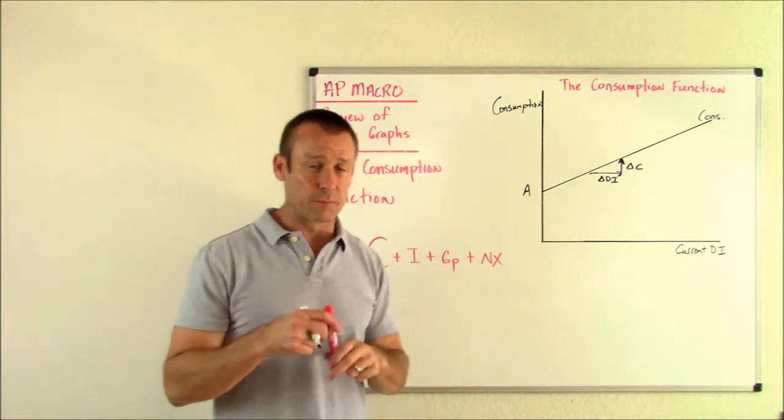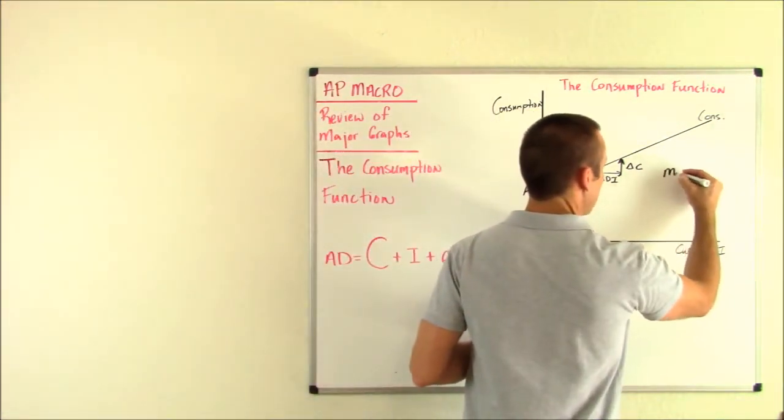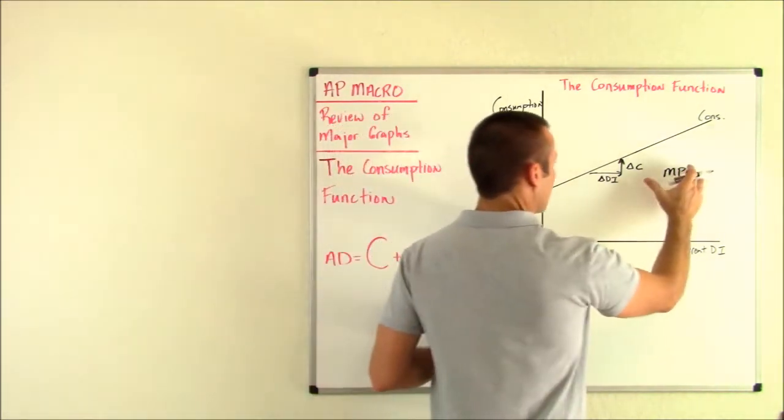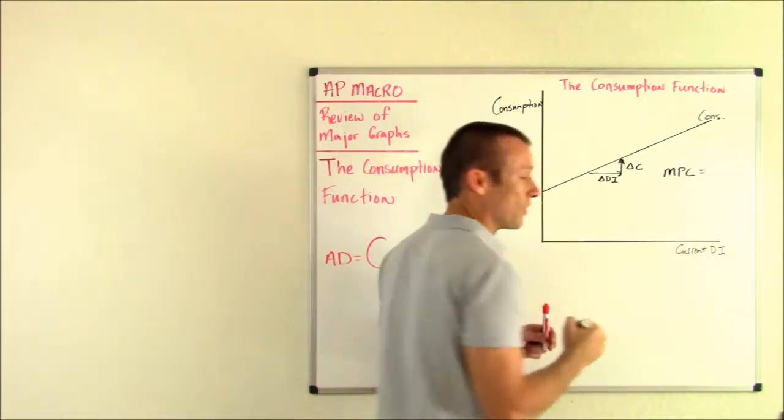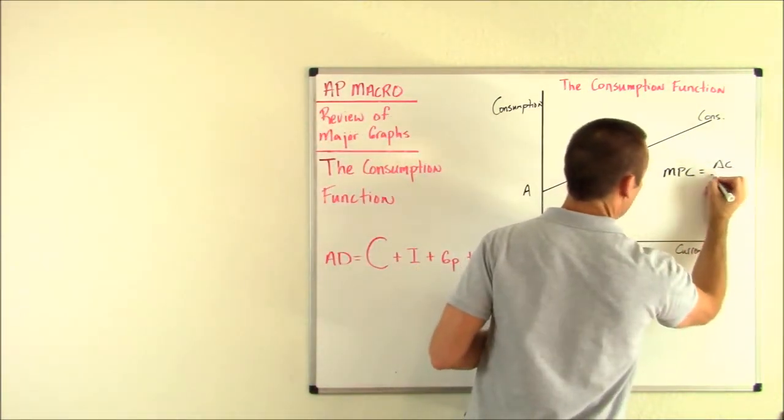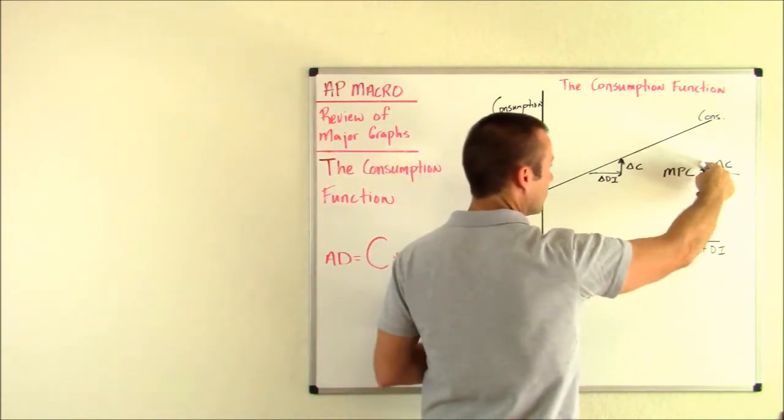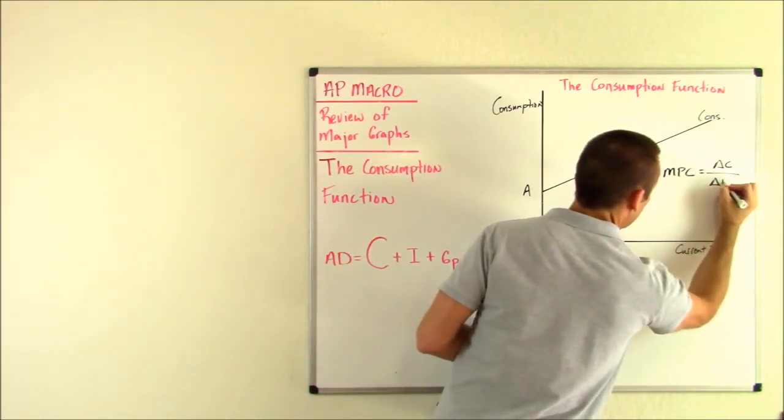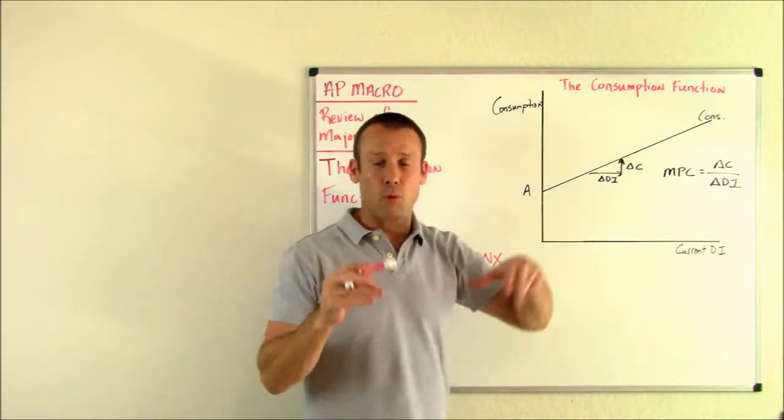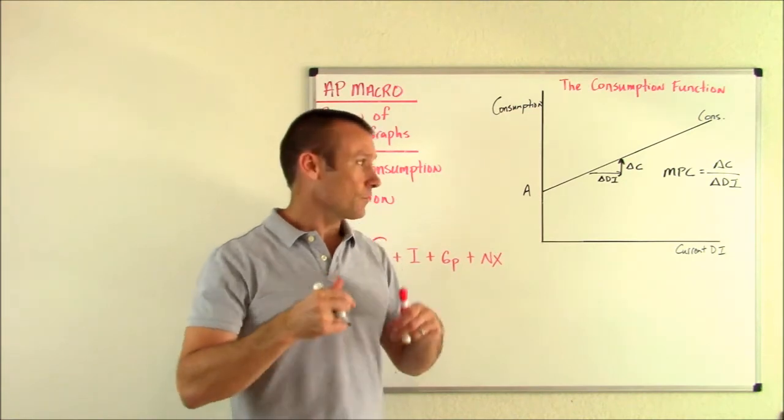That slope is known as something in macroeconomics. It's known as the MPC, marginal propensity to consume. It is so important that students know that the marginal propensity to consume is the delta in consumption, that's the rise, that's what goes in the numerator, over the delta in DI. That's an incredibly important formula, and that is the slope of the consumption function.